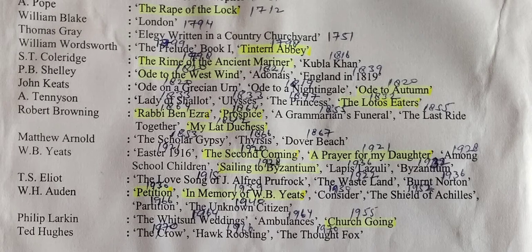Matthew Arnold — The Scholar Gypsy, Thyrsis, Dover Beach. W.B. Yeats — Easter 1916, The Second Coming, A Prayer for My Daughter, Among School Children, Sailing to Byzantium, Lapis Lazuli. T.S. Eliot — The Love Song of J. Alfred Prufrock, The Waste Land, Burnt Norton. W.H. Auden — Petition, In Memory of W.B. Yeats, Consider, The Shield of Achilles, Partition, The Unknown Citizen. Philip Larkin — The Whitsun Weddings, Ambulances, Church Going. Ted Hughes — The Crow, Hawk Roosting, The Thought Fox.